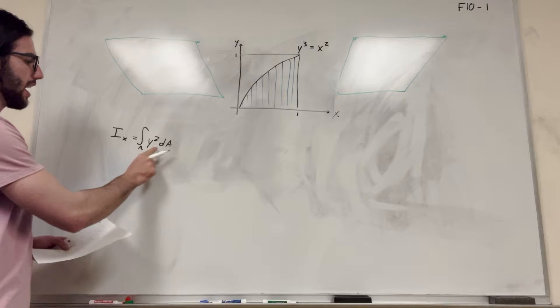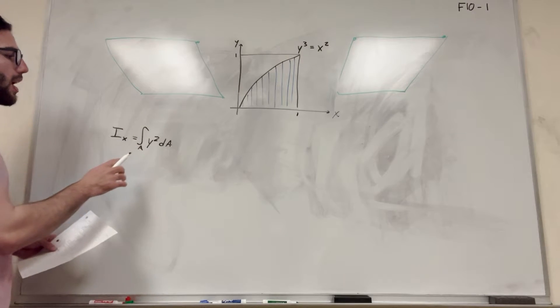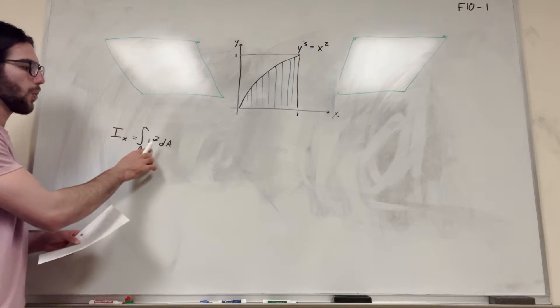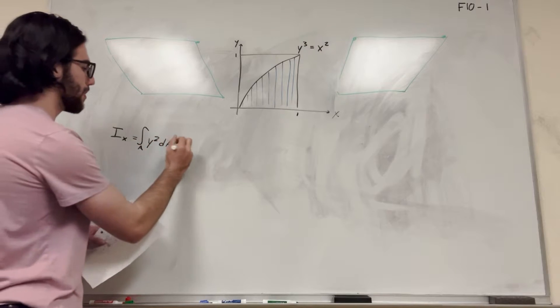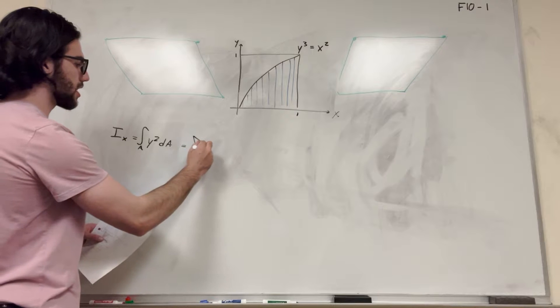So the dA can be expanded further and we need to make sure that there's y in here. What we want to do is expand this dA into something that relates to dy. So let's expand this further. So it's going to be the integral. Now let's find out what our bounds are. This y squared is going to stay.